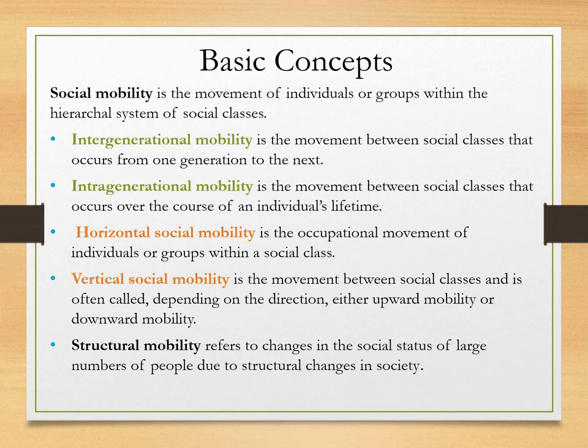We also have horizontal and vertical social mobility. Horizontal mobility is the occupational movement of individuals within one social class — for example, you quit working at a grocery store and go work at Target, roughly the same position in the class hierarchy. Vertical mobility is movement between social classes, called either upward or downward mobility. Going from a grocery store to clerical work with better pay and benefits is upward vertical social mobility.